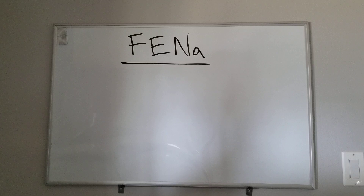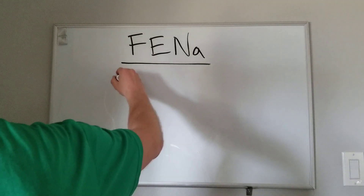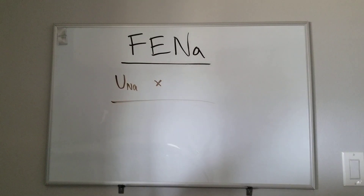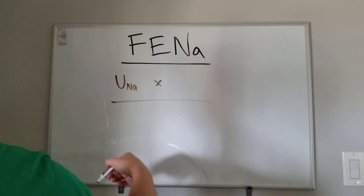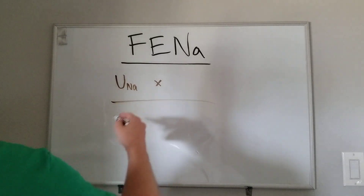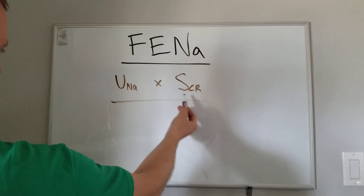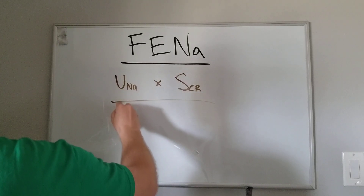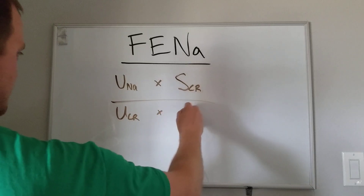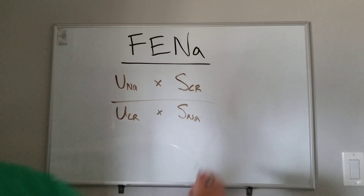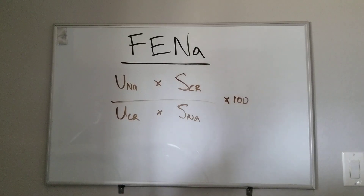The way that I memorize this is Luna Lovegood. Luna is the first thing — so if you just remember Luna Lovegood, you have your urinary sodium, and then you know that everything is just opposite. So what you're going to be looking at is sodium and creatinine, so everything's opposite. The opposite of U is S, opposite of sodium is creatinine, and then just flip it. So urinary sodium over serum creatinine, times urinary creatinine times serum sodium. Multiply it by 100 to get your percentage — that's the FENa.